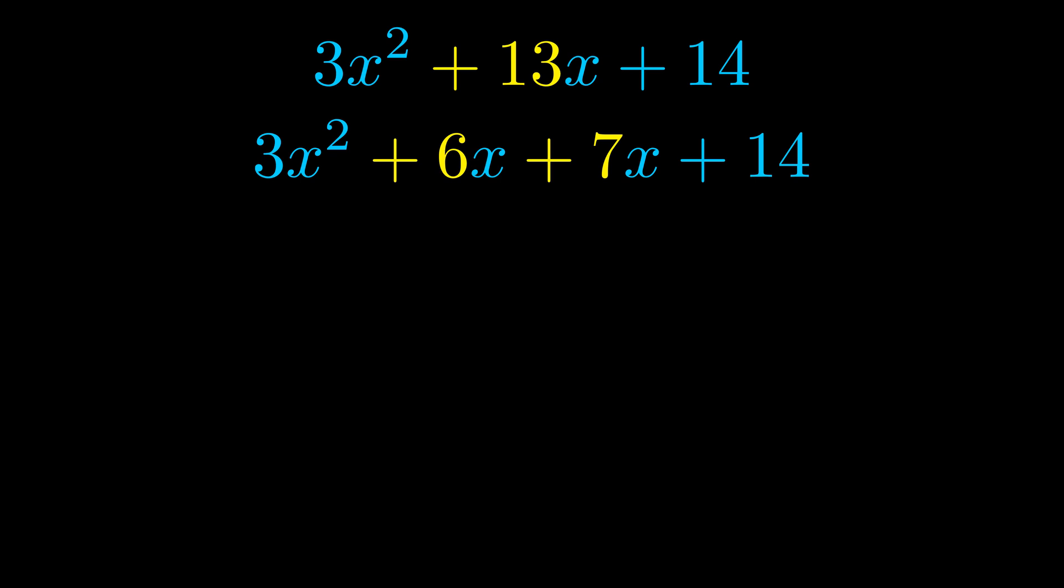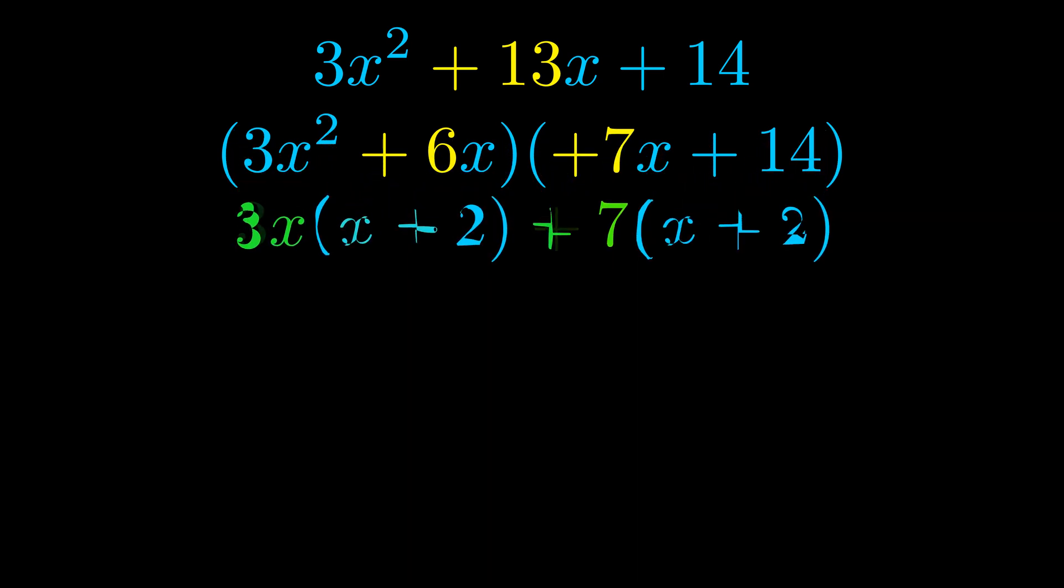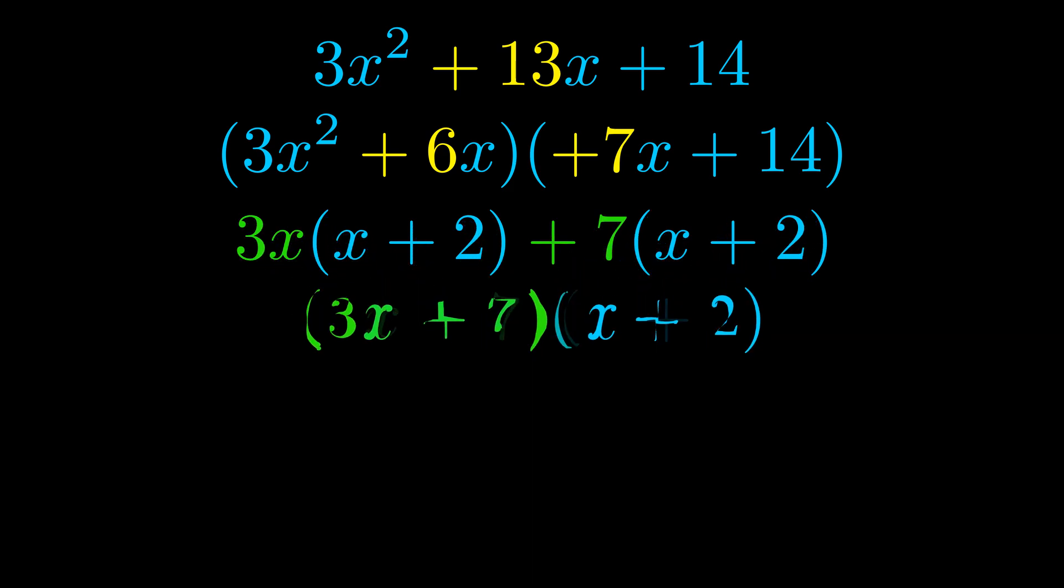Once we've done this we go ahead and we put parentheses around the first term and the last term. And we do that so that we can take the greatest common factor out of both terms. We can see the greatest common factor is now outside in green. Notice also how what remains inside of the parentheses is the same in both cases. The blue values are the same.